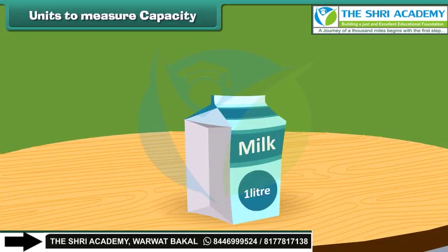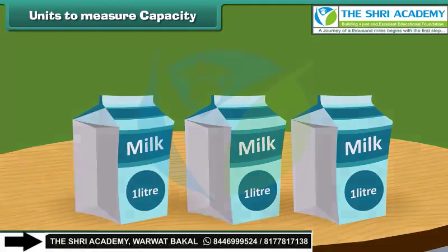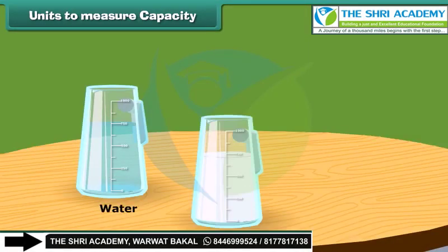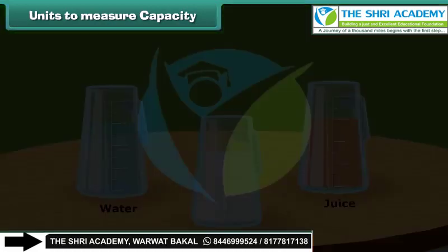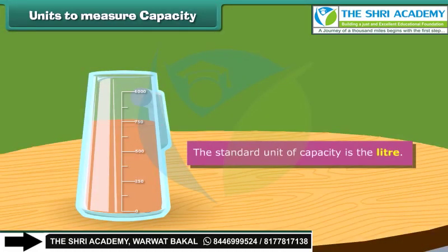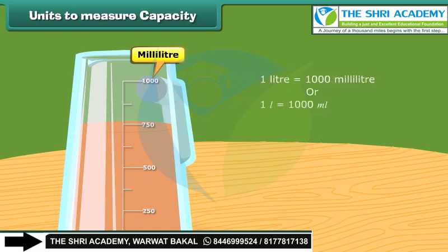How much milk comes to your home daily — 1 liter, 2 liters or more? The capacity of liquids like water, milk, juice, etc. is measured in liters or milliliters. The standard unit of capacity is the liter. The part obtained by dividing 1 liter into 1,000 equal parts is called a milliliter. So 1 liter equals 1,000 milliliters.